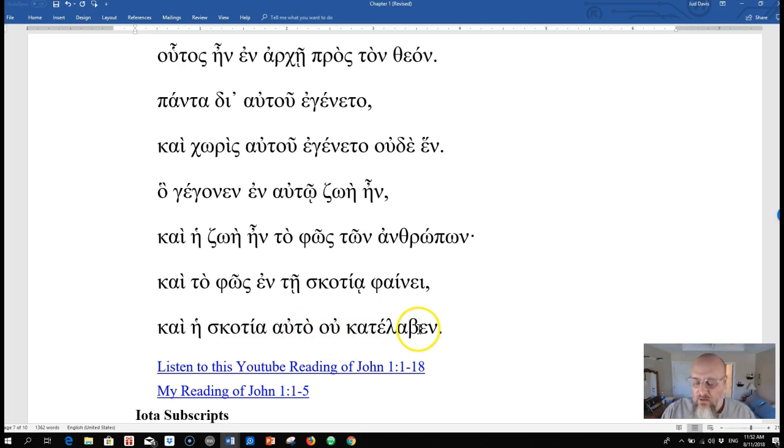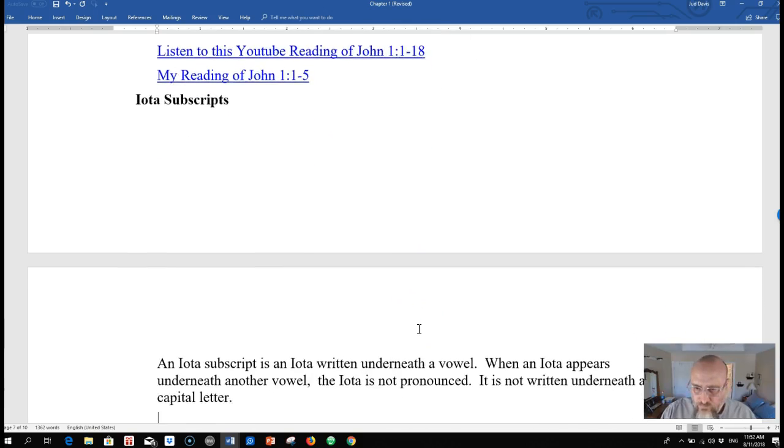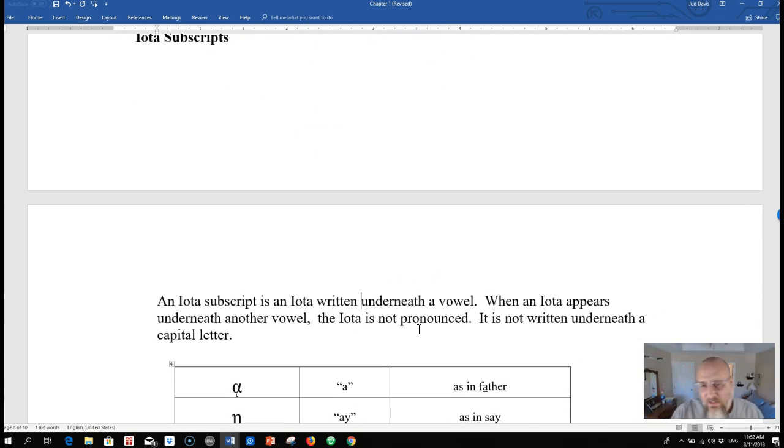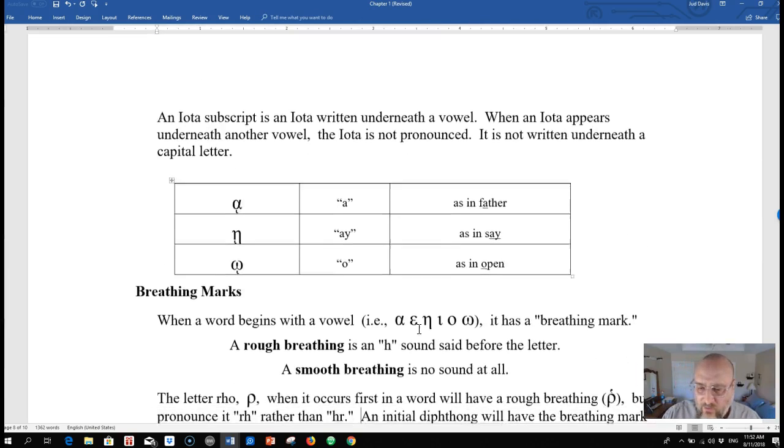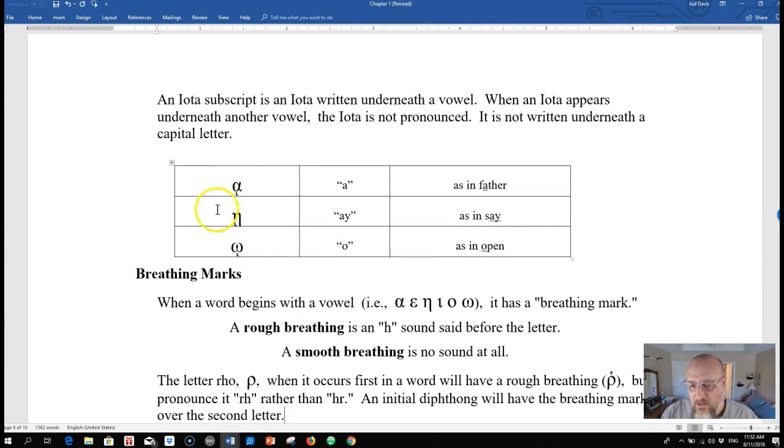So where we pick up today will be 1B. We'll pick up with these iota subscripts. An iota subscript is written below the word. It does not affect pronunciation but it will affect the grammar, and so you'll need to be able to start recognizing these very small letters written underneath vowels.